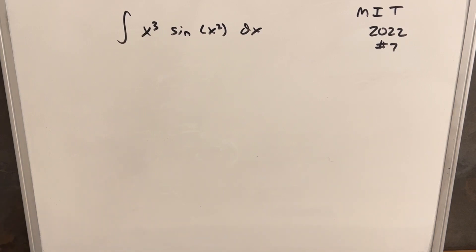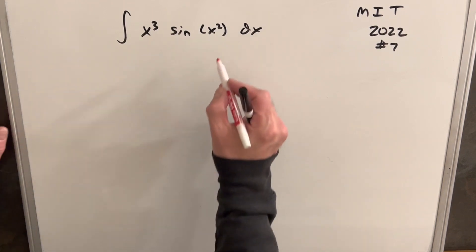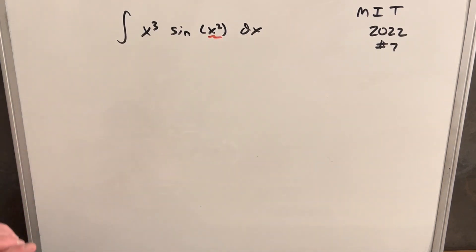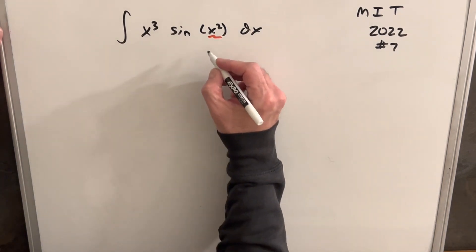We have another integral on the board from the MIT integration bee 2022, problem number seven. We have the integral of x cubed sine x squared. The problem here is dealing with the x squared inside the sine — we don't really know how to integrate that, so that's going to need a substitution.